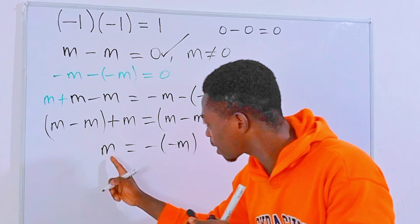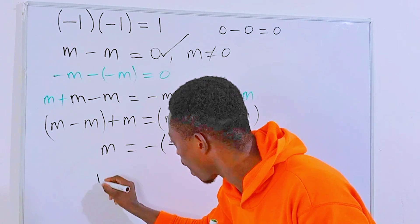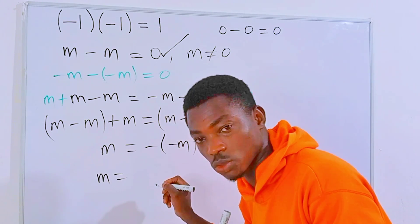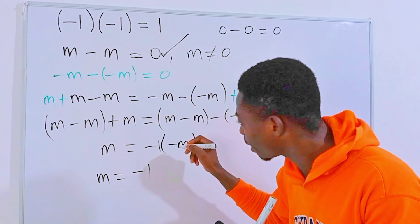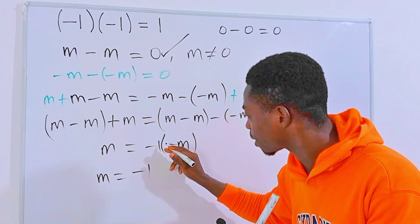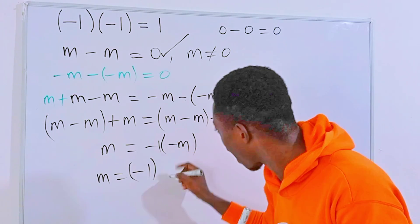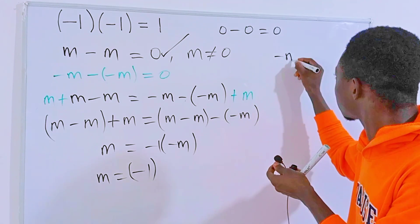Then let's keep this m over here, so we will have m is equal to negative one, because here we have one but just that we don't write it, then times minus m. Minus m is also the same as negative one times m.